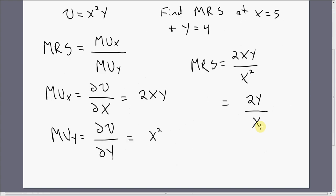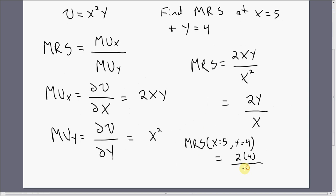Evaluating this marginal rate of substitution when x equals 5 and y equals 4 gives us 1.6. Notice: the marginal rate of substitution is nothing more than the absolute value of the slope of the indifference curve. We found the slope of the indifference curve at that coordinate equaled minus 1.6, and the marginal rate of substitution at the same coordinate gives us 1.6 — the same answer, absent the minus sign. Hope you found this video helpful. Thank you.